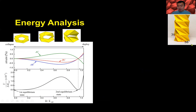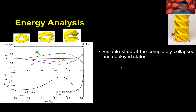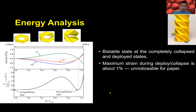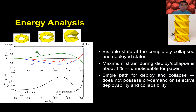For the first pattern with angles 38 and 30, here is the normalized energy as a function of H. H equals zero corresponds to the completely collapsed state, and the other end is the fully deployed state, with strain shown at the three creases. Key features: it is bi-stable — both collapsed and deployed states are equilibrium states — and there is an energy barrier between them. The maximum strain for all three members AC, BC, and AB is small, less than one percent, meaning paper can be used. Also, both deploying and collapsing follow the same single path, overcoming the same energy barrier.